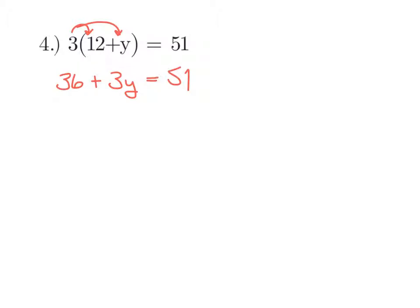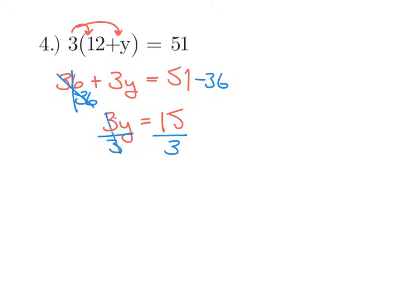We want to get the variable alone — we don't want to subtract 3y or subtract 3, because y is inside the 3. We take care of the 36 first, so we subtract 36 from both sides. 36 minus 36 is 0, leaving 3y on the left. On the right, 51 minus 36 is 15. Since 3y is 3 times y, we divide both sides by 3. 3 divided by 3 is 1, so 1y equals 15 divided by 3, which is 5.